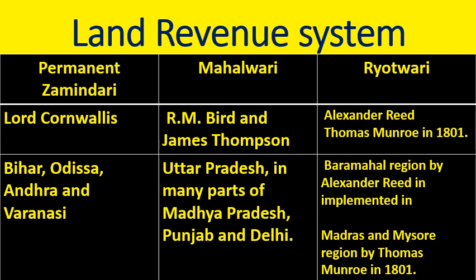As students, this is a table you need to memorize. Questions may come like this: who introduced the Permanent Zamindari system and where? Who introduced the Mahalwari system and Rayatwari system? Permanent Zamindari system was introduced by Lord Cornwallis. Mahalwari system was introduced by R.M. Bird and James Thompson. Rayatwari system was introduced by Alexander Reid and Thomas Munro. Where they were introduced is also given in the table. You must learn all these.